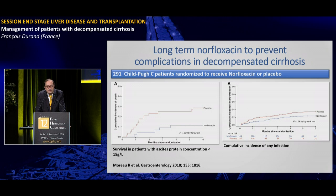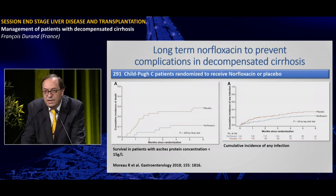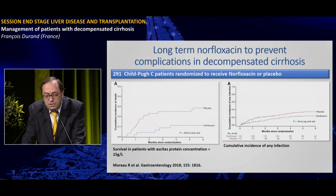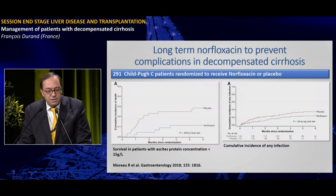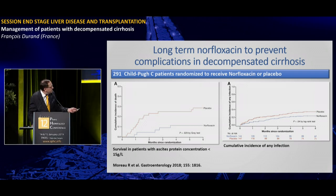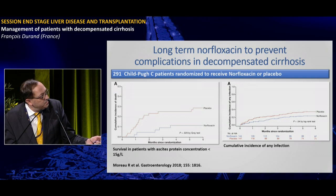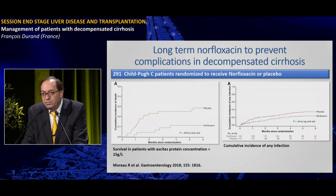A way to avoid mortality related to infections in patients with decompensated cirrhosis is to prevent infections. One approach is long-term administration of norfloxacin. In a study by Richard Moreau, 291 patients with Child-Pugh C cirrhosis were randomized to receive norfloxacin or placebo. In patients with ascites and low protein concentration, norfloxacin was associated with lower mortality and a lower risk of developing infections during follow-up.